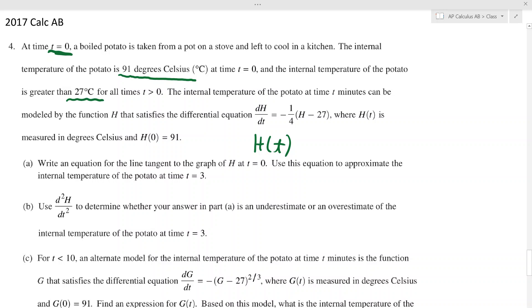It says write an equation for the tangent line at t equals zero. Well, the point we have on h of t is that h of zero is 91. That's the only point we know right now. So the only place they can ask me to find a tangent line is at zero, 91. And we know tangent lines look like this: y minus 91 equals the slope t minus zero.